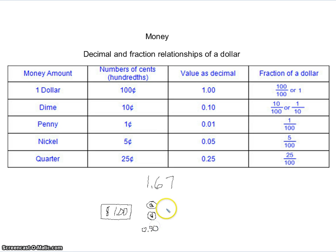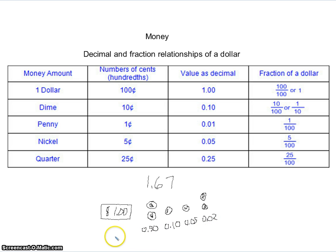I still have seventeen hundredths to go. I'm going to use a dime — that's ten more hundredths, so I'm up to sixty hundredths. Then I'll use a nickel — that's five more hundredths, so now I'm up to sixty-five. And I'll use two pennies — that's two more hundredths. Adding it all together: a dollar is worth a whole, so I get one dollar and sixty-seven cents, or one and sixty-seven hundredths. That's using money to model decimals and fractions. That concludes our lesson.